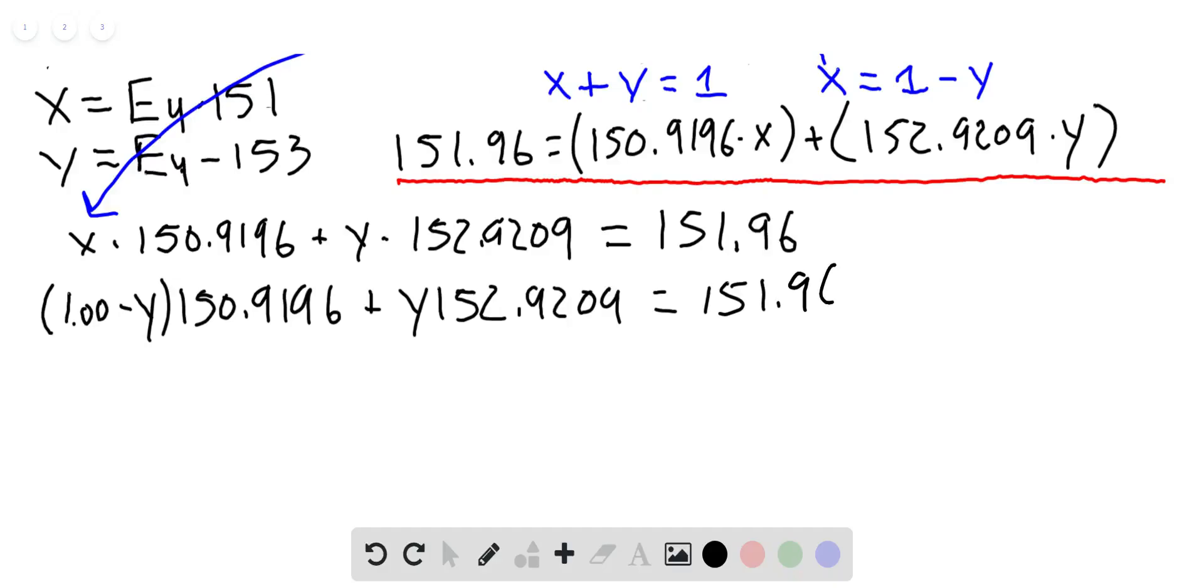I'll distribute the 150.9196 into this part here. So 150.9196 times 1 is 150.9196, and 150.9196 times negative y is going to give me negative 150.9196y. And I will add this to the 152.9209y.